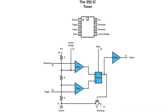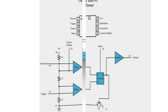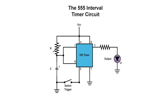The 555 timer IC is used as a timer in circuits requiring precision timing, as well as an oscillator to provide pulses needed to operate digital circuits. The internal circuitry of the chip is made up of transistors, diodes, and resistors. The example shows the way the timer is used as an interval timer.